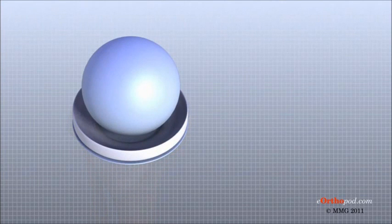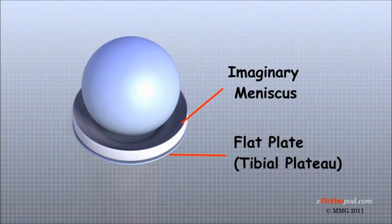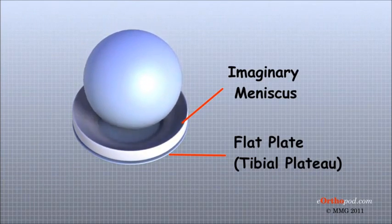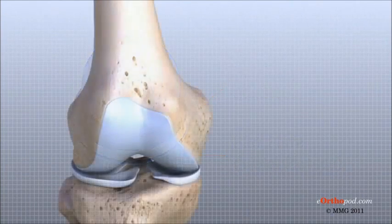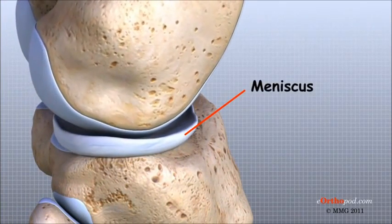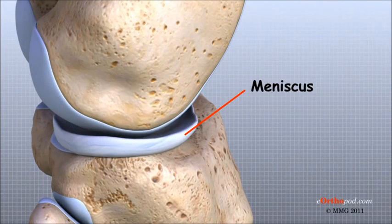Imagine the knee is a ball resting on a flat plate — the ball being the condyles of the femur and the plate being the tibial plateau. The menisci actually wrap around the round condyles to fill the space between them and the flat tibial plateau, acting like a gasket to help distribute the weight from the femur to the tibia. Without the menisci, any weight on the femur would be concentrated to one point on the tibia, but with the menisci, weight is spread out across the tibial surface, protecting the articular cartilage from excessive forces.